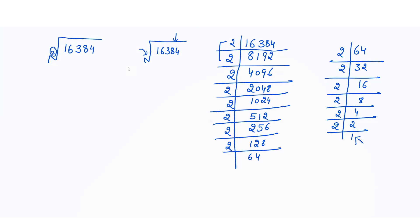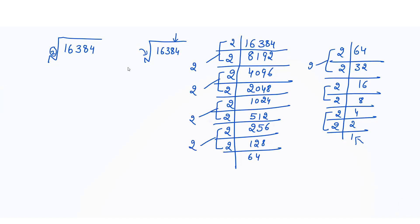So let's make sets of 2 same numbers, another one, and so on. Once we are done making these sets, we have to write down one number from each set. To find the square root, we write down all these numbers and multiply them.